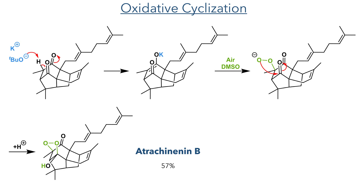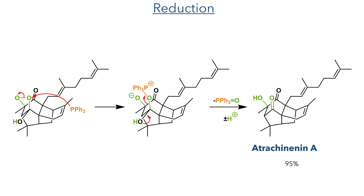This compound could then be reduced to form Atrojenenon A using triphenylphosphine. This first attacks the peroxide and breaks the oxygen-oxygen bond. The decomposition of the phosphonium-activated hemiacetal then follows, eliminating triphenylphosphine oxide. A proton transfer completes the reaction and produces Atrojenenon A in a 95% yield.